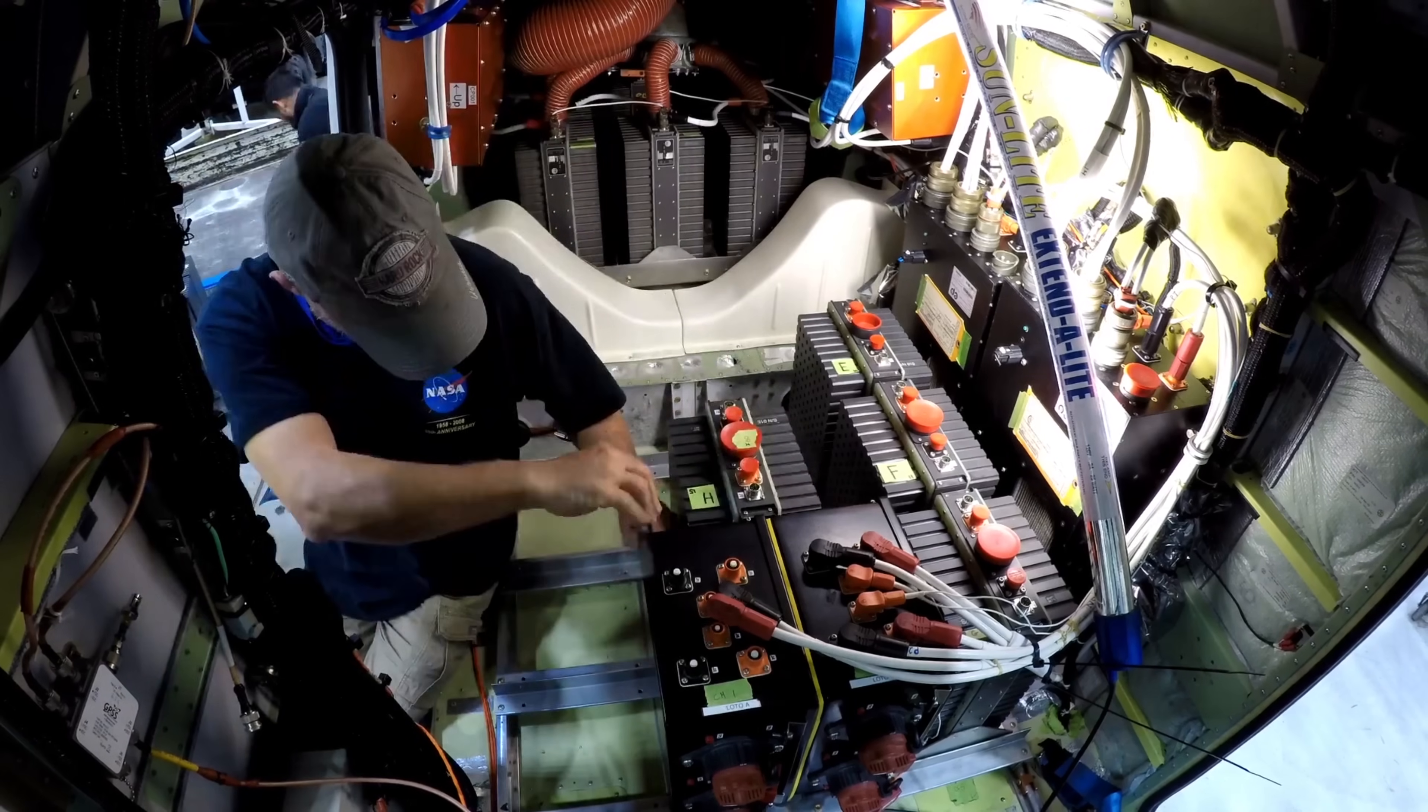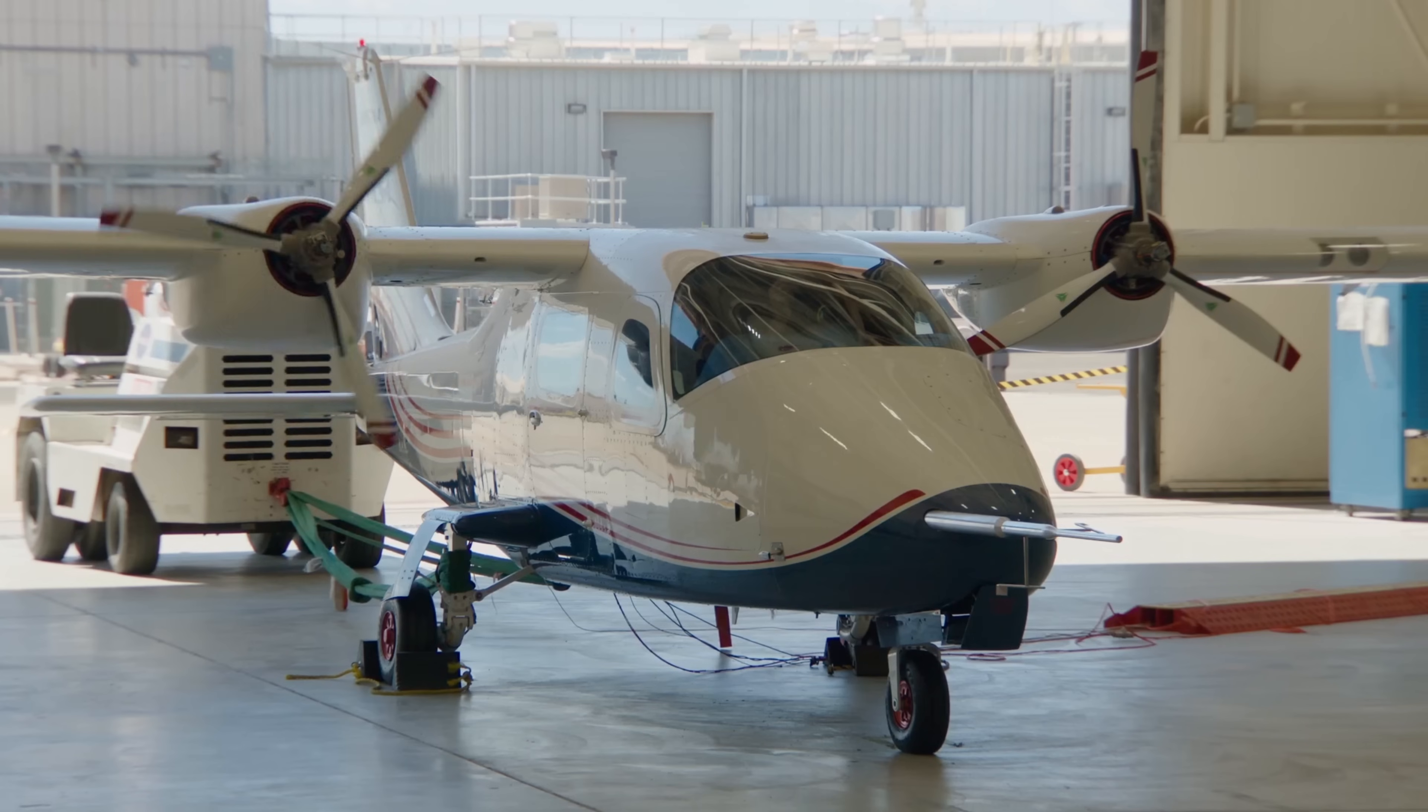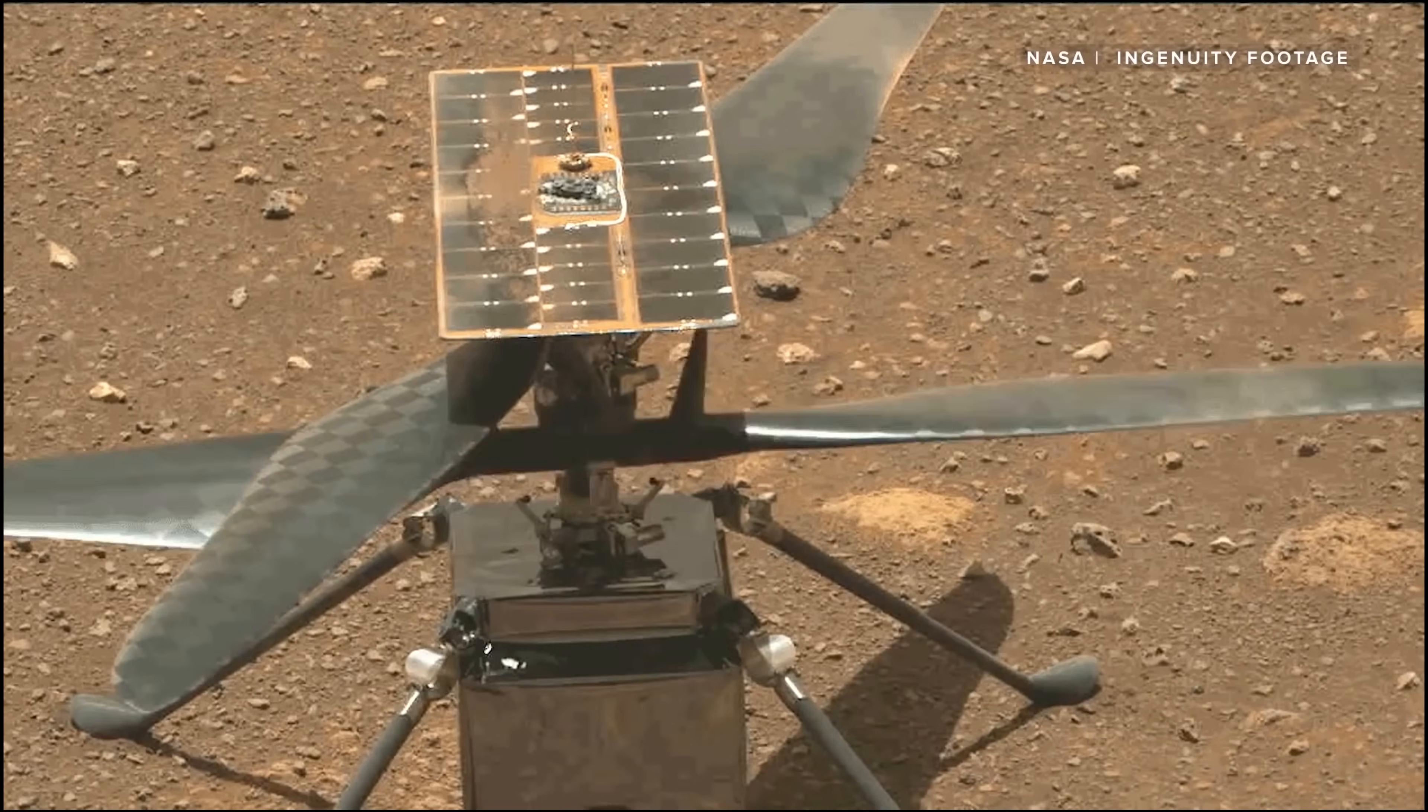NASA is already working on several projects to develop and test electric aircraft technologies, such as the X-57 Maxwell, the first all-electric experimental aircraft; the Scepter, a hybrid-electric distributed propulsion aircraft; and the Ingenuity, a small helicopter that flew on Mars.